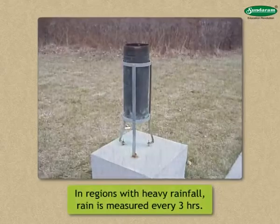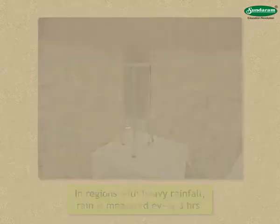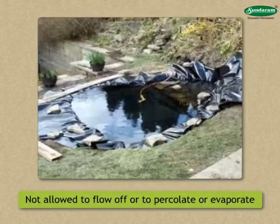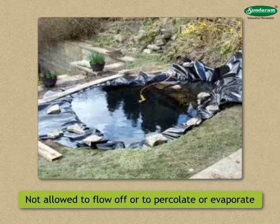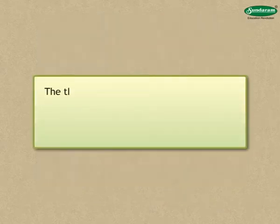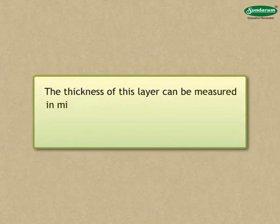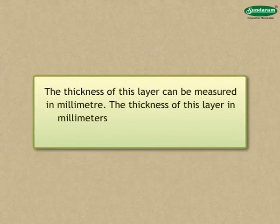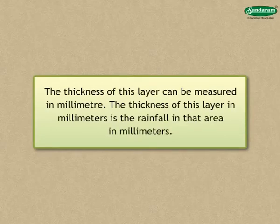In regions with heavy rainfall, rain is measured every 3 hours. If rain is not allowed to flow off, percolate, or evaporate and is allowed to get stored on flat ground, it will form a layer on the ground. The thickness of this layer can be measured in millimeters. The thickness of this layer in millimeters is the rainfall in that area in millimeters.